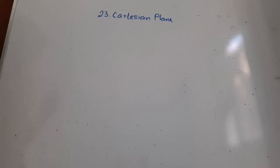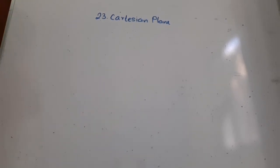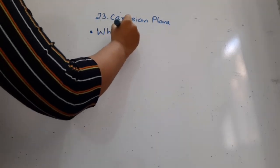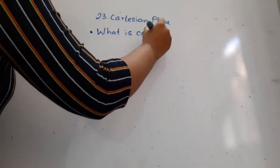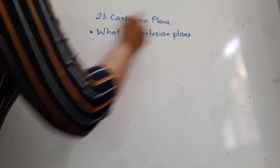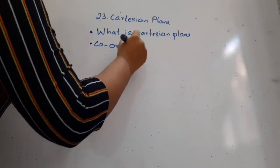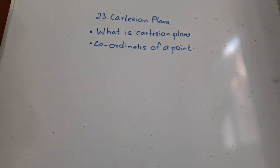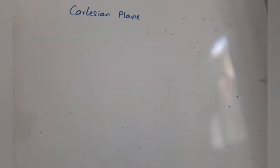Hello my dear children, welcome back to my channel. Happy learning mathematics! Today we will be learning your 23rd chapter, which is Cartesian Plane. Under here we will be covering two important topics: what is a Cartesian plane, and the second one, the coordinates of a point. These are the two topics which you will be learning. This is a very short and easy lesson.